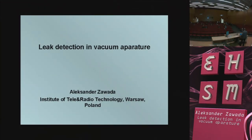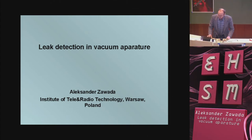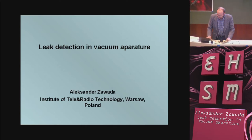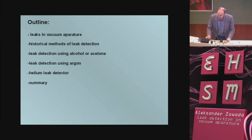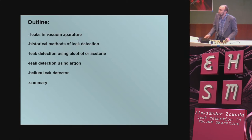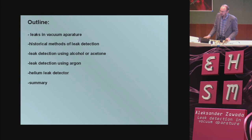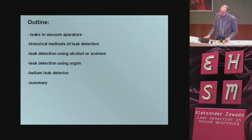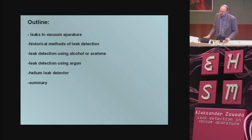Thanks for the introduction. I will tell you about leak detection in vacuum apparatus. Short outline: first, about leaks in vacuum apparatus; next, something about historical methods of leak detection; then about leak detection using alcohol or acetone; and finally, leak detection using argon and a helium leak detector.